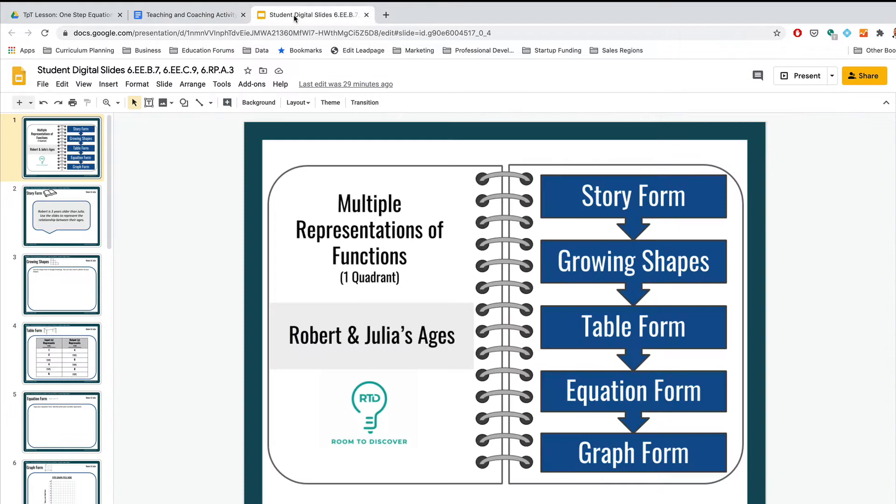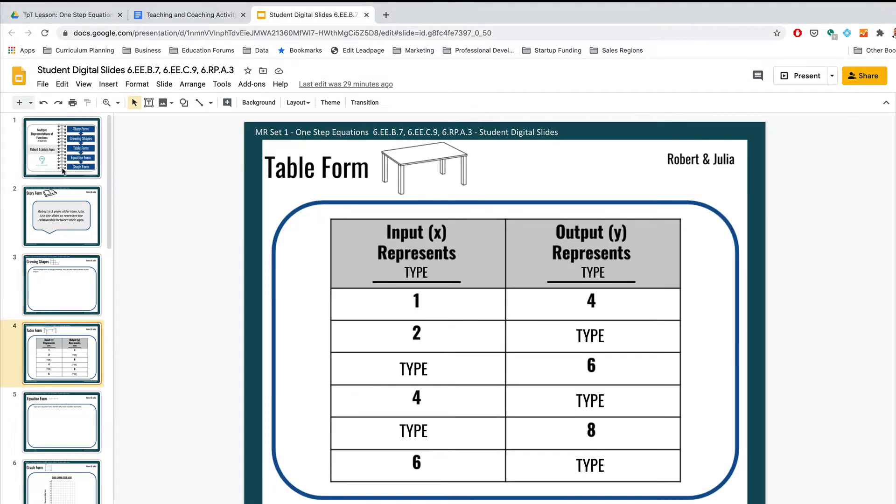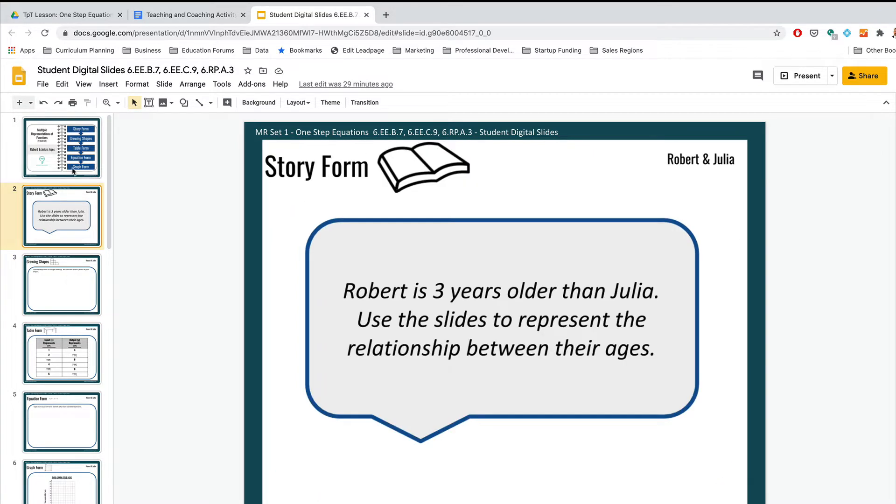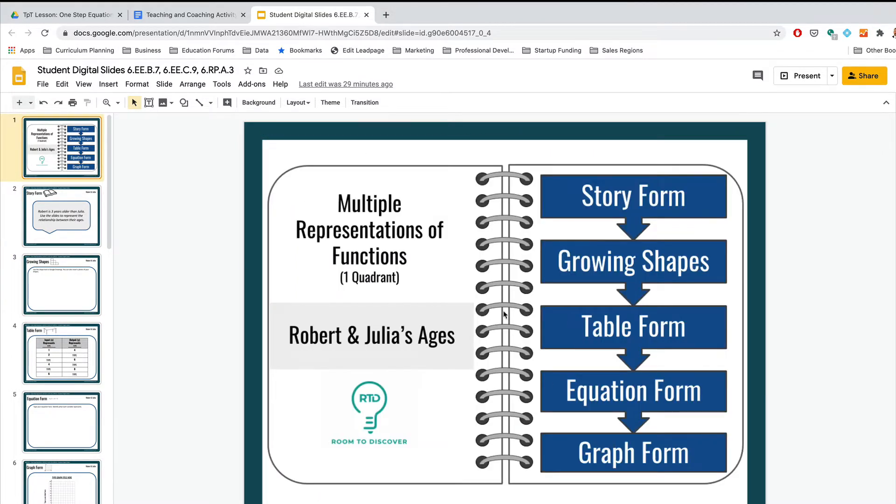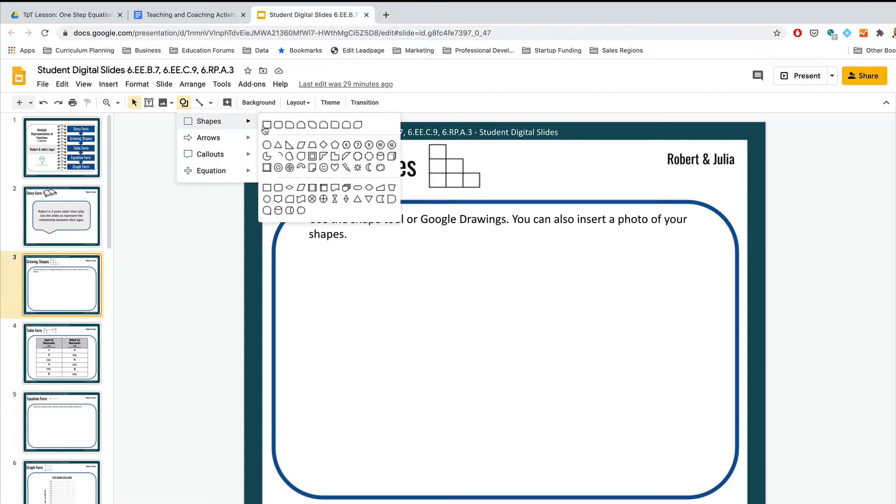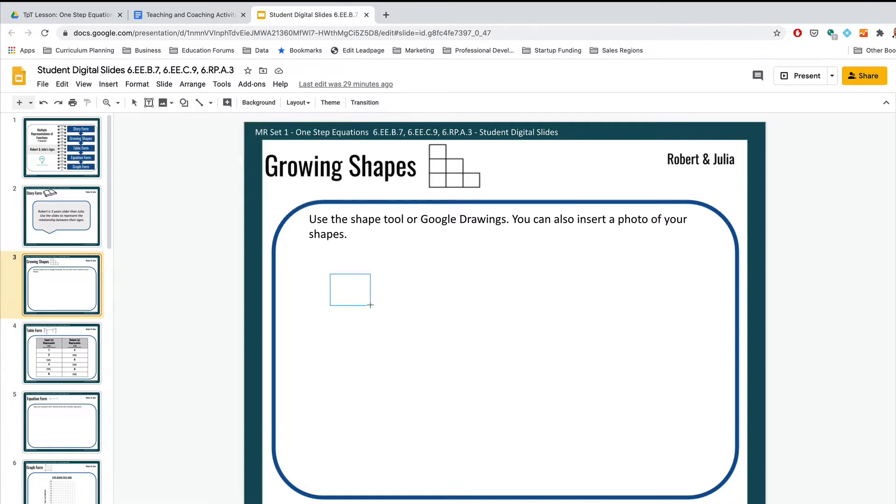But if you wanted something more advanced this is a lot of fun. I use Google slides for this and this activity give them a word problem in story form and they have to represent it in different forms. This is really flexible. So for example growing shapes if you're familiar with that you know I can use all of the features of Google drawing here. So if I wanted to make a growing shape to represent this situation it doesn't really take very long at all.